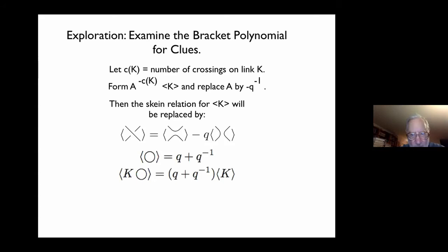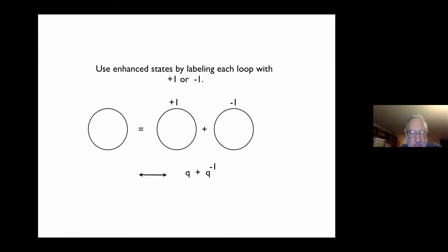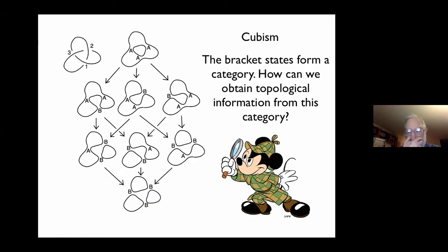Now we're going to use an idea due to Oleg Viro called enhanced states. The simplest example is to assign to a circle two signs, a plus sign and a minus sign. So a bare circle becomes a sum of two circles: the evaluation is Q for the one with the plus sign and Q inverse for the one with the minus sign — which accords with our evaluation of the circle. Every state in a picture like this is going to have plus or minus signs on it as well.